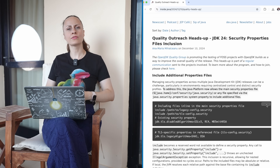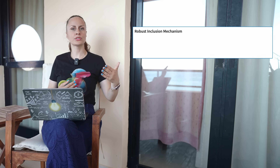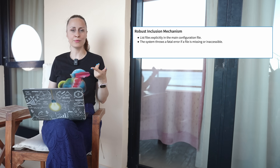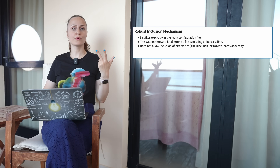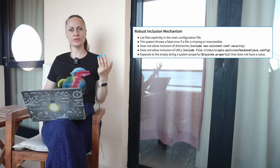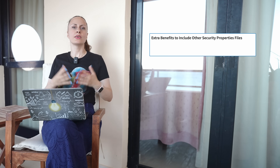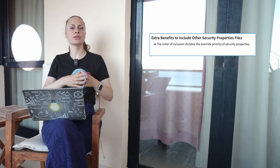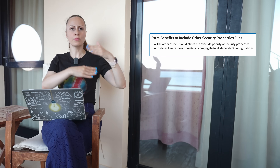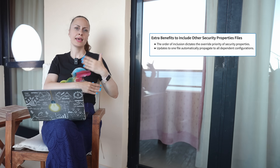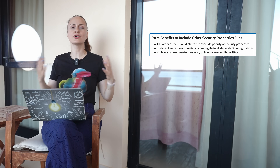Include became a reserved word, not available to define a security property. This inclusion is recursive, allowing for nested configurations provided no cycles occur. Paths to the included files can be absolute or relative. If local, the JVM resolves each relative path against the base file containing its include definition. The inclusion mechanism ensures robust security by listing files explicitly in the main configuration file, the system throwing a fatal error if a file is missing or is inaccessible, thus preventing misconfigurations, not allowing inclusion of directories or URLs, and moreover, expanding to the empty string of a system property. There are more benefits by including other properties files: the order of inclusion dictates the override priority of the security properties, updates to one file automatically propagate to all dependent configurations, and profiles ensure consistent security policies across multiple JDKs.